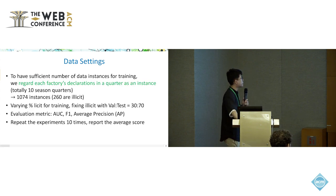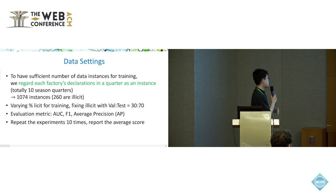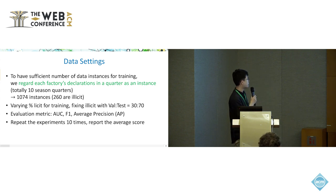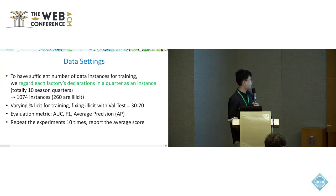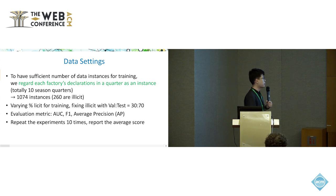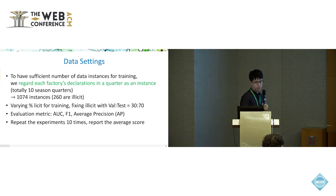Here are the main results. We compare with two types of models: unsupervised outlier detection and one-class classification. The results show that our method outperforms other standard methods in terms of different training label data sizes and across all metrics.